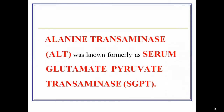Alanine aminotransferase, also known as ALT, and also known as serum glutamate pyruvate transaminase or SGPT. As the name indicates, alanine aminotransferase is an enzyme involved in the transamination reaction — it transfers the amino group. The transfer of amino groups occurs between glutamate and pyruvate, which is why this enzyme is also known as serum glutamate pyruvate transaminase.